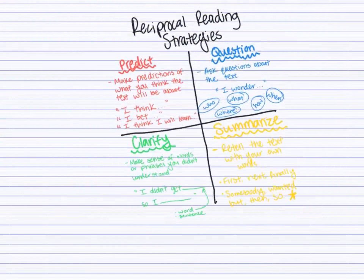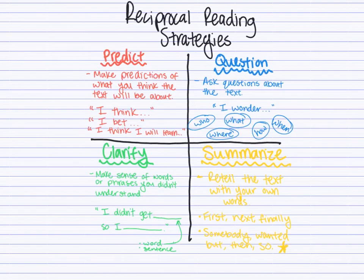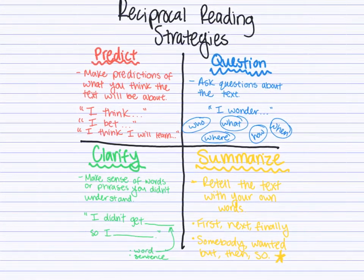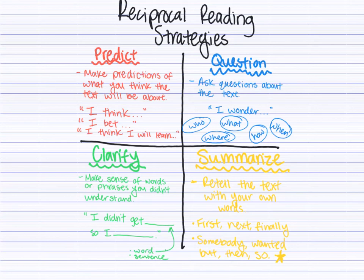So to recap, 6th graders, these are our four reciprocal reading strategies: Predict — making predictions of what you think is going to happen; Question — the questioner asks questions about the text; Clarify — makes sense of words or phrases you didn't understand; and Summarize — retelling the story with your own words. These are roles we will be assigning throughout the year. Make sure you take a picture of these notes and upload them to Canvas when you are done. Nice job, everyone.